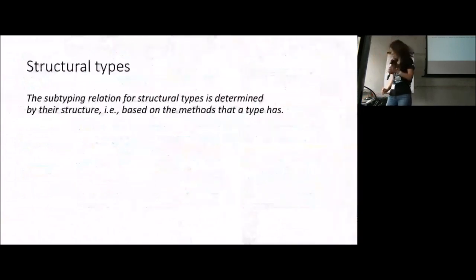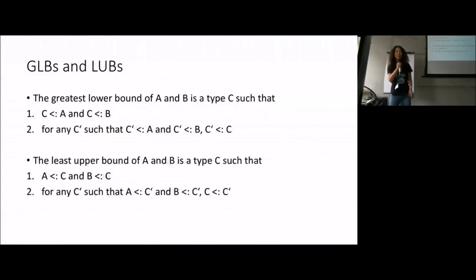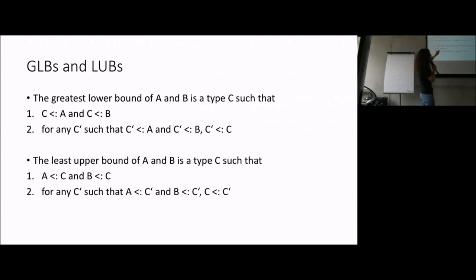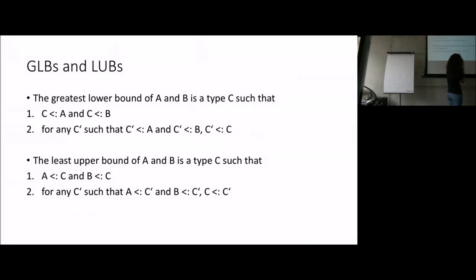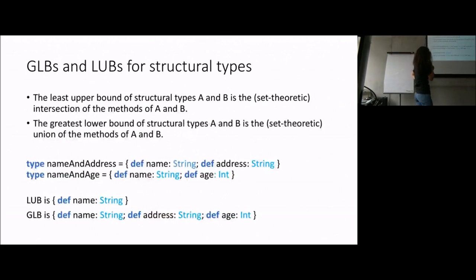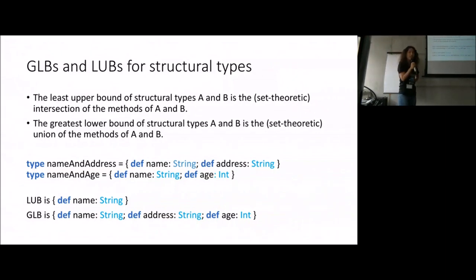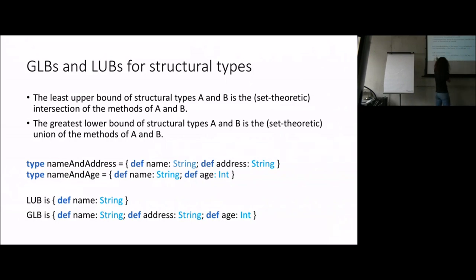The last concept is greatest lower bound (GLB) and least upper bound (LUB). In the context of structural types, the least upper bound of structural types A and B is their intersection — the methods they share. The greatest lower bound is the union — everything from both. So if I have NameAndAddress and NameAndAge, their LUB (intersection) is just Name, and their GLB (union) is NameAddressAndAge.